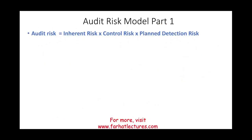The audit risk model is: Audit Risk = Inherent Risk × Control Risk × Detection Risk. Every time you have a formula, it's very important to break it into separate components, understand each component separately, then study how these components relate to each other.